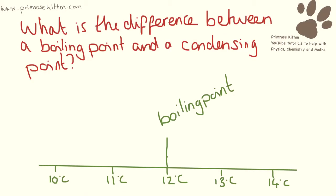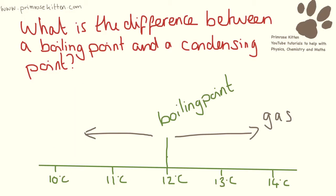So let's say our hypothetical compound has a boiling point of 12 degrees C. When we are this side of the line, when we are hotter, it is a gas. And when we are this side of the line, when it is colder than 12 degrees C, it is a liquid. So we can say its boiling point — the point at which it turns from a liquid to a gas — is at 12 degrees C.